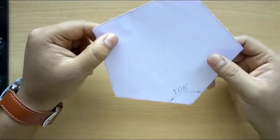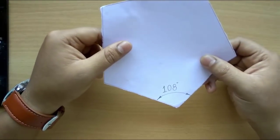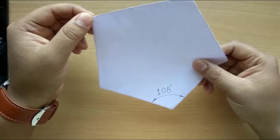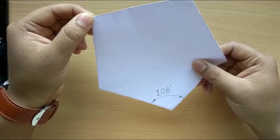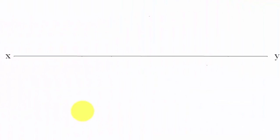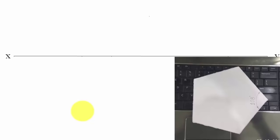That was all about the demonstration of this particular question. Let's head over now to drawing sheets — I'll go to PowerPoint to explain how all these things can be implemented. Now, for step number one, we're going to assume that this plane is entirely resting on the horizontal plane. In such a case, the true shape of the surface will be evident from the top, and hence we begin by making the top view first.